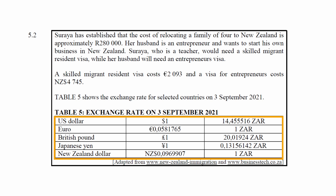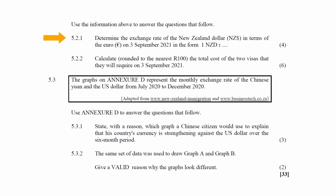You are also given an exchange rate table for the different currencies. In question 5.2.1, you have to determine the exchange rate of the New Zealand dollar in terms of the euro on the 3rd of September 2021, in the form of 1 New Zealand dollar equals ? euros.